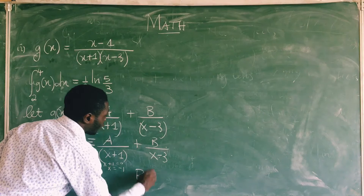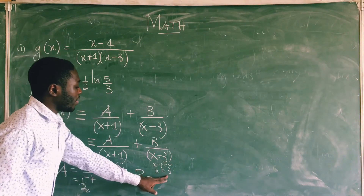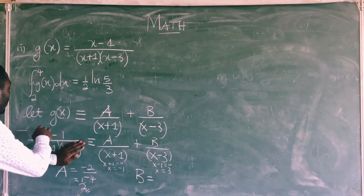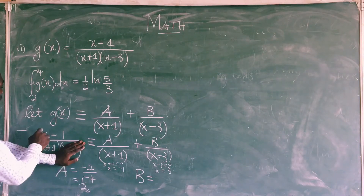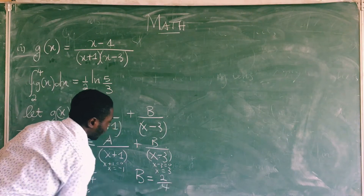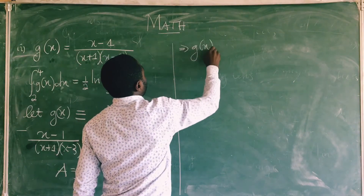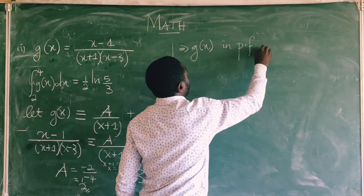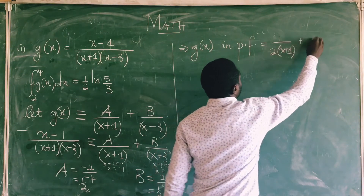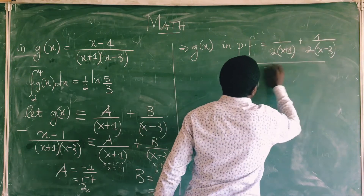To get the value of B, I equate the denominator of B to zero: x minus 3 equal to 0, so x equal to 3. When I get that value, I come back to my left hand side, cover the denominator of B, and substitute 3 wherever I see x. So 3 minus 1 gives me 2, divided by 3 plus 1 which is 4, giving B equal to 1 over 2. This means g of x in partial fractions is equal to 1 over 2(x plus 1) plus 1 over 2(x minus 3).